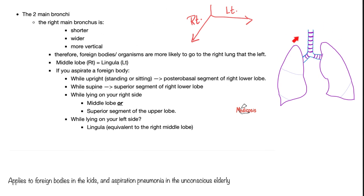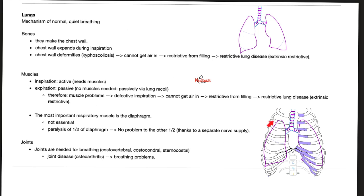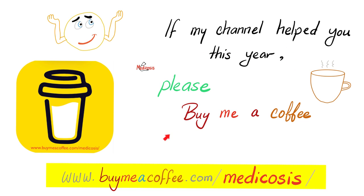The lungs are encased by the chest wall, which includes bones, muscles, and joints. The bones are the ribs, sternum, clavicle, and vertebrae. The muscles are the intercostal muscles. During normal quiet breathing, you only need muscles during inspiration — expiration is a passive process and needs no muscles. The most important respiratory muscle is the diaphragm. Yes, you can live with just half a diaphragm.